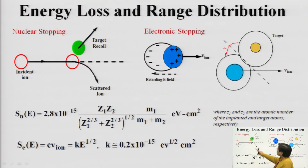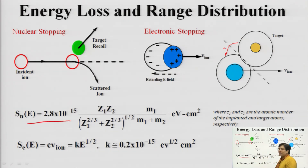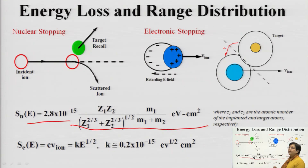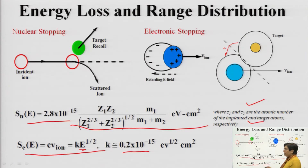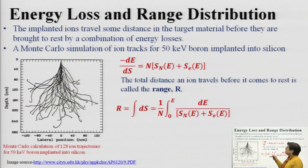There are two stopping mechanisms: nuclear stopping — when the ion strikes the nucleus — and electronic stopping — when it strikes electrons. For nuclear stopping, the energy is given by 2.8 × 10⁻¹⁵ × Z₁Z₂ divided by Z₁ raised to a power, where Z₁ and Z₂ are the atomic numbers of the implanted and target atoms respectively, and M₁ and M₂ are the masses. The electron energy is given by k × E^(1/2), where v_e is the ion striking energy and k is approximately 0.2 × 10⁻⁵⁰. These are the two stopping mechanisms through which penetration is studied.